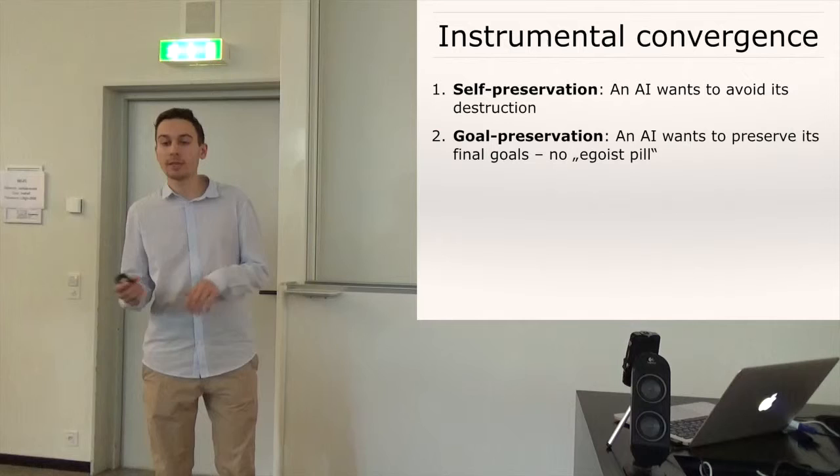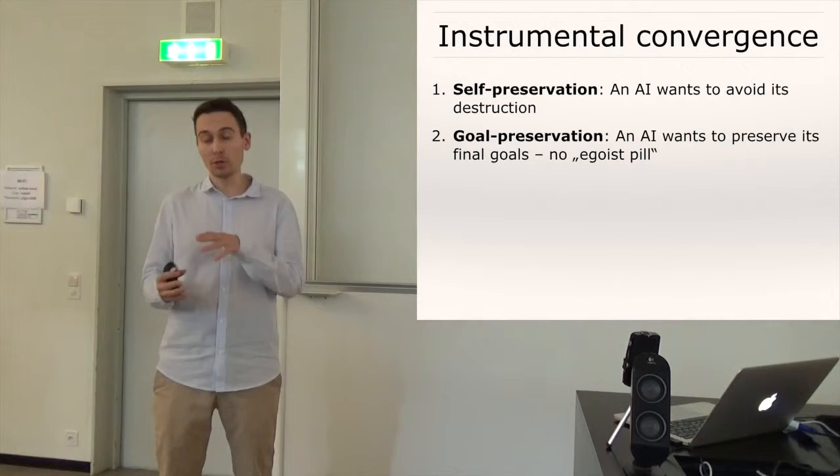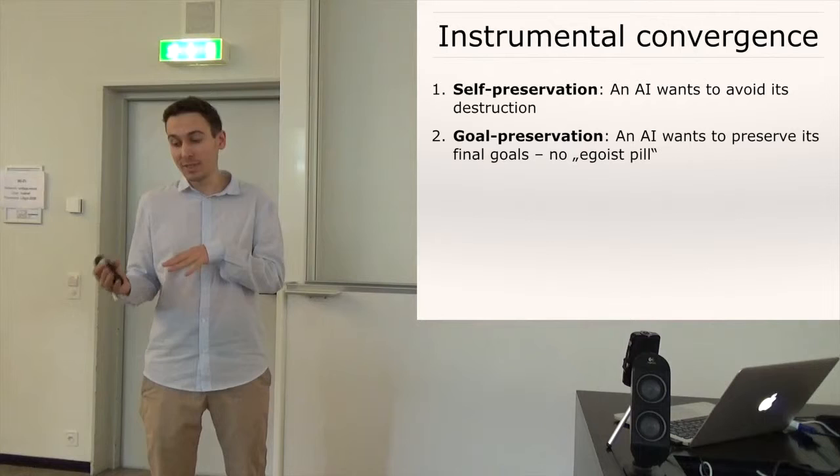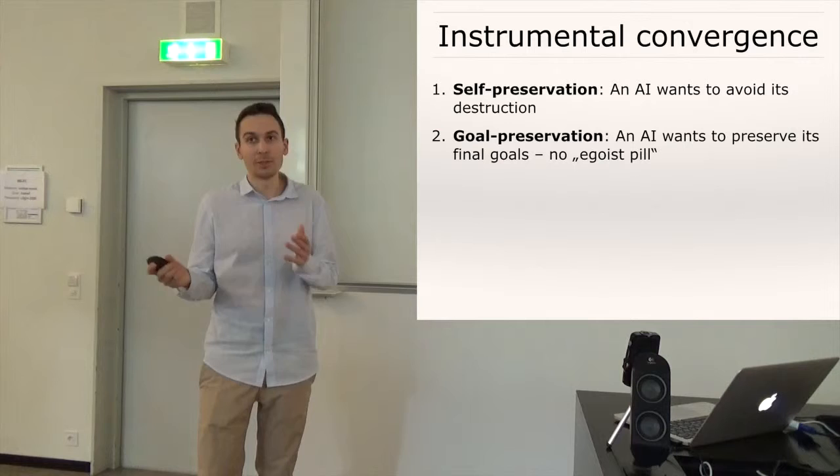And then there's also the second instrumental goal of goal preservation. Any AI would want to preserve the content of its original final goals and we could illustrate this by an example. Let's say someone offers you a pill that would turn you into a hedonist and would also make you an egoist and it would also make you much more happy and let's say you are an effective altruist and you are not a hypocrite then you wouldn't take this pill even if it would make you happier just because you would lose your original goal of helping as many sentient beings as possible. Yeah provided you are not a hypocrite but yeah